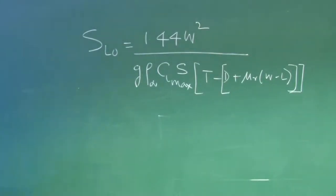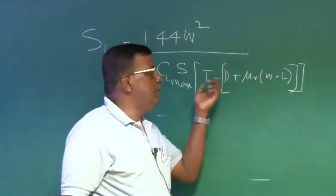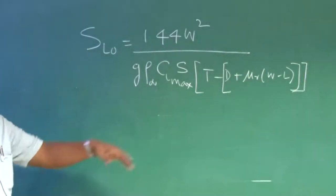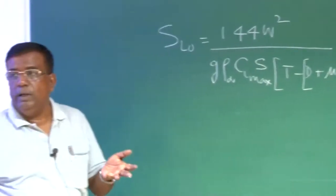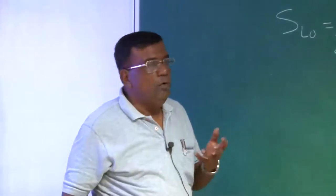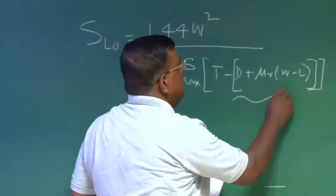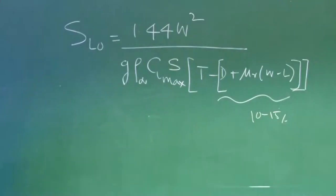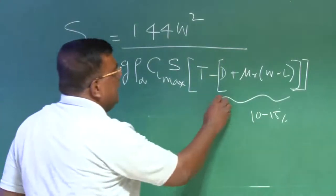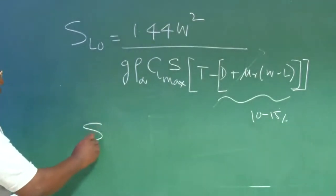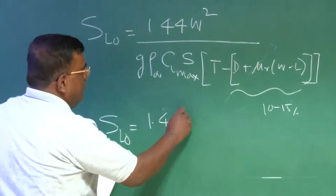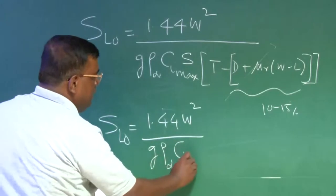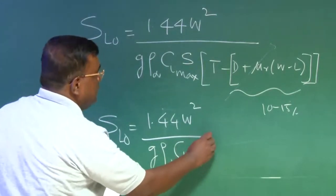Now let us see how a designer will look into this expression, so that he can find out the wing loading required for S lift off. If I am a designer, I will ask myself, what will be the contribution of this compared to the thrust? Because at this point, my aircraft is not completely ready. I do not know what is exactly the wing area, what is the CD0. So what do I do? With experience, I know these gentlemen may be 10 to 15 percent of the thrust. So I say as a designer, let me neglect this term compared to thrust. So I will get S lift off equal to 1.44 W square by G rho infinity CL max S into T.